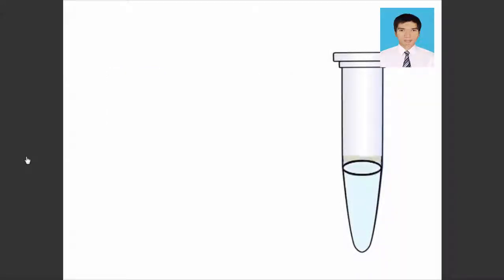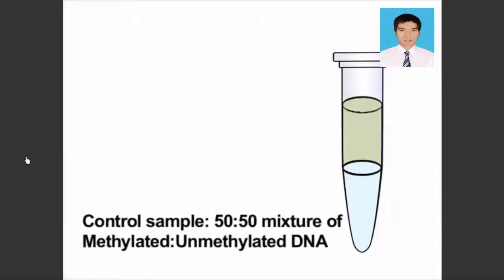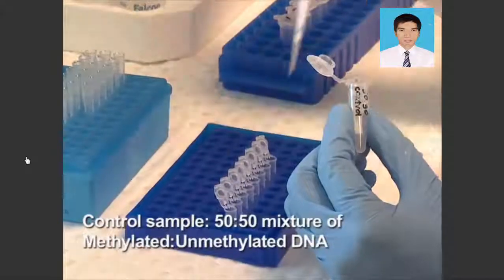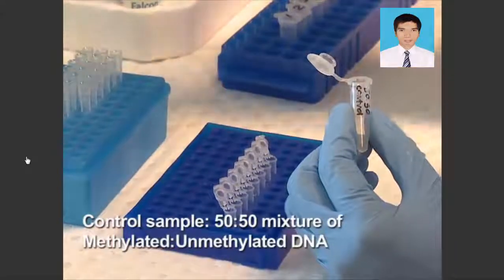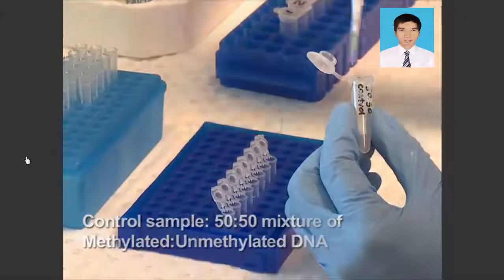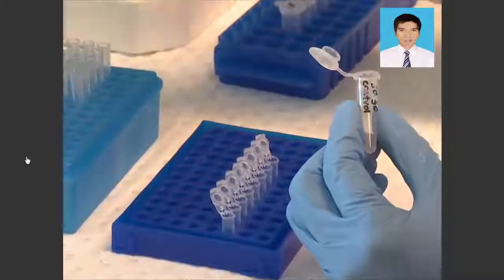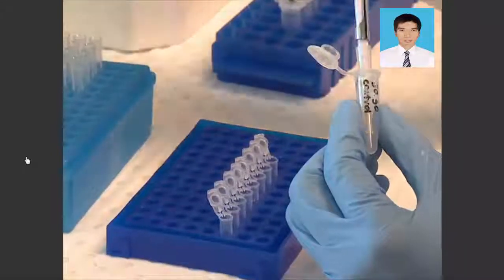To test for amplification bias of methylated or unmethylated material, use a 50-50 methylated, unmethylated, fully bisulfite-converted control sample to test for proportional PCR amplification with bisulfite conversion-specific primers and PCR reaction mix.